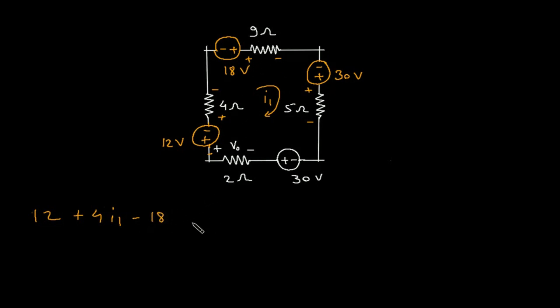Then plus 9 I1, then minus 30, then plus 5 I1, then minus 30. Then this will be plus, this will be minus according to the direction of I1. So plus 2 I1 equals 0.